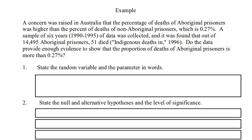A concern was raised in Australia that the percentage of deaths in Aboriginal prisoners was higher than the deaths of non-Aboriginal prisoners, which is about 0.27%. A sample of six years, 1990 to 1995, of data was collected, and it was found that out of 14,495 Aboriginal prisoners, 51 died in custody. Do the data provide enough evidence to show that the proportion of deaths of Aboriginal prisoners is more than 0.27%?